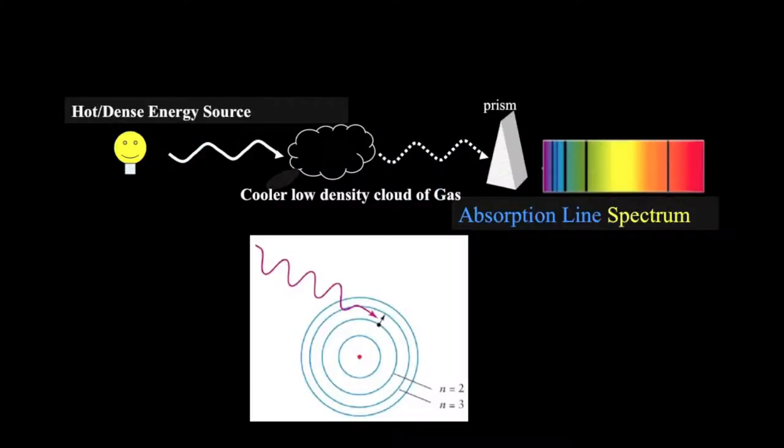And what type of objects in space are going to give us this absorption spectrum? Well we have to have something that's hot and dense and then we have to have something that has a cool low density gas either in front of it or around it.